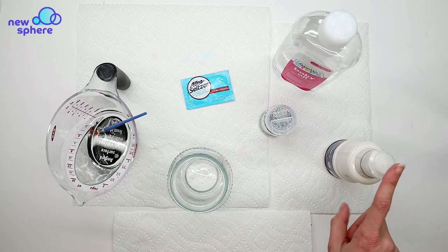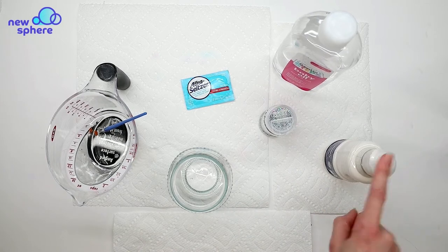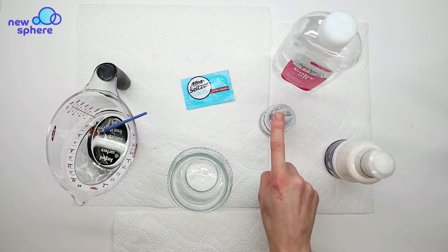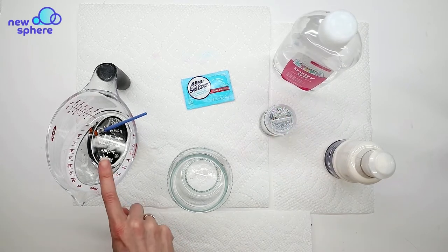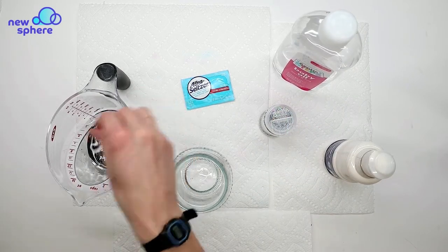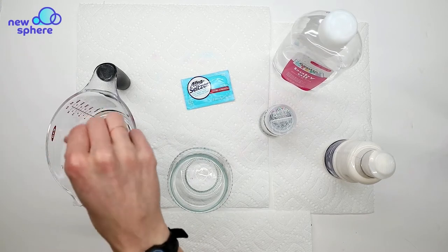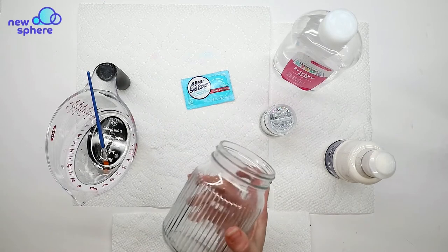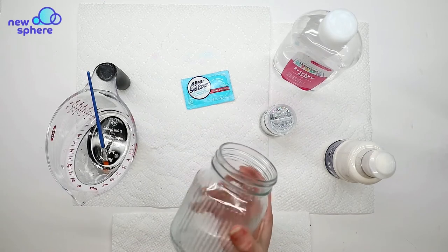For my materials, I have white paint, baby oil, glitter, a fourth cup of water, a paintbrush just for mixing—you could use a spoon instead—a jar, and you can use a plastic cup if you want instead.